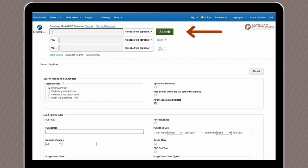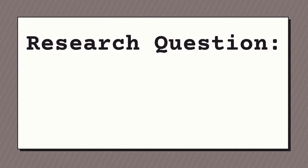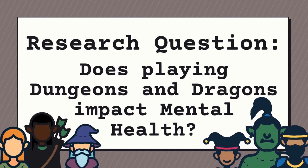You will see a search bar that functions similarly to the ones you find on Google, Netflix, or Amazon. However, since we are working with a database, we will need to ask a research question. For this tutorial, our research question is: does playing Dungeons and Dragons impact our mental health? Unfortunately, we can't enter a question into the search bar. If we did, EBSCOhost would look for every single word in that sentence. So let's break this down into search terms.